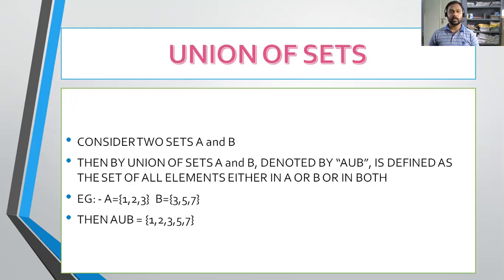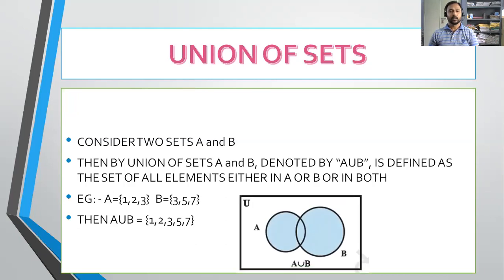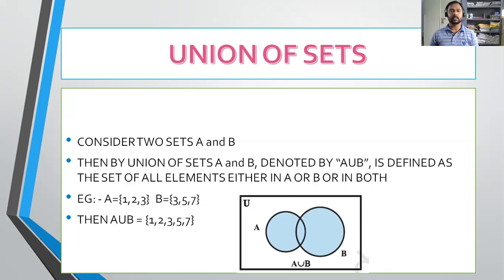How can we represent union of sets using a Venn diagram? Here A and B are shown and there may be some common elements. The whole shaded region represents the union of A and B.